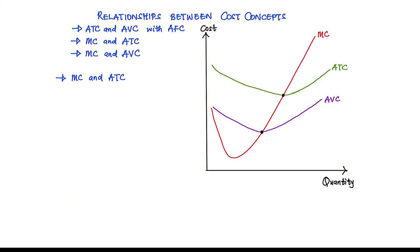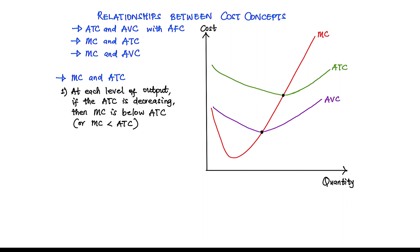The next relationship is between the marginal cost and the average total cost. The first relationship is that when the average total cost is decreasing, we expect the marginal cost to be less than the average total cost at each level of output. So at each level of output, if the ATC is decreasing, the marginal cost is below the ATC. For example, at quantity q1, this is the value of the marginal cost, and this is the value of the average total cost at q1.